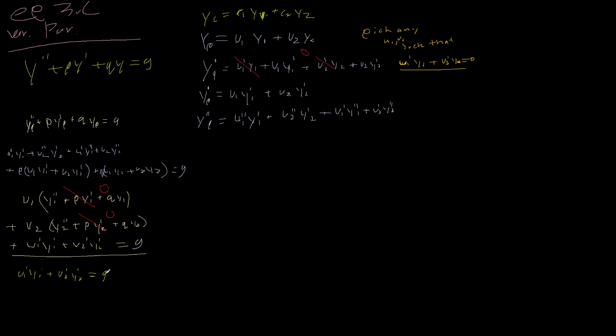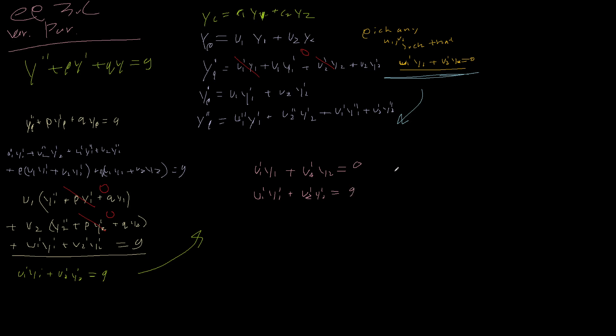So combining both results, we end up with this system of two equations: u1'·y1 plus u2'·y2 equals zero, and u1'·y1' plus u2'·y2' equals g.